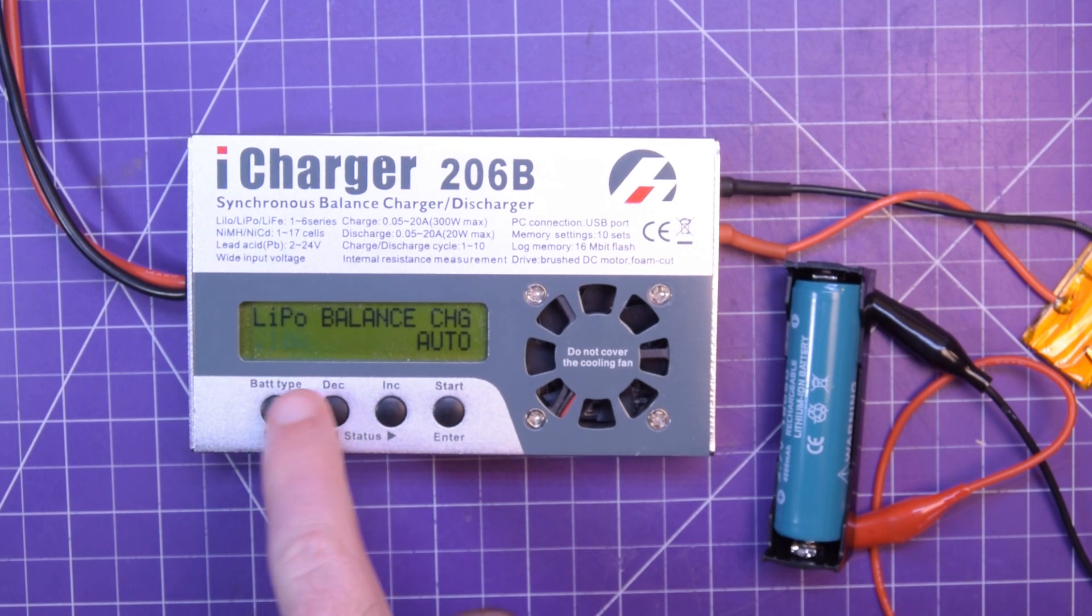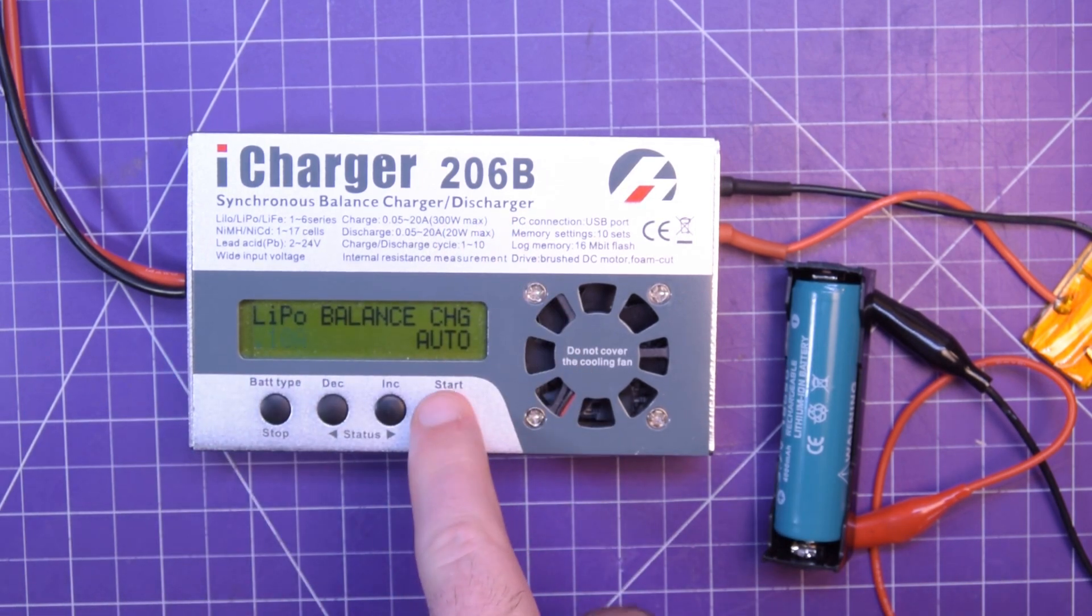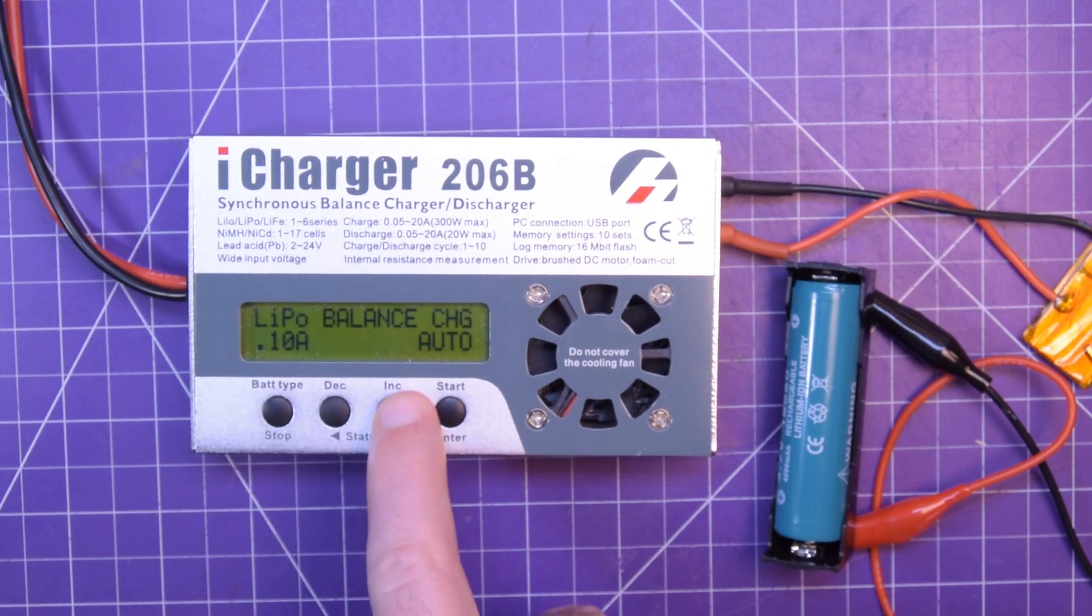We'll go pretty low at 100 milliamps. And I should be able to change what kind of cell it is. Or maybe I just press and hold. Balance port not connected. Okay, yeah, it doesn't want to let me do it. That's fine.